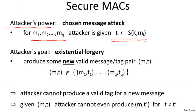The attacker's goal is what's called an existential forgery — he tries to produce some new valid message-tag pair that is different from any of the pairs given to him during the chosen message attack. If he can do that, we say the system is insecure; if he can't, we say the system is secure.